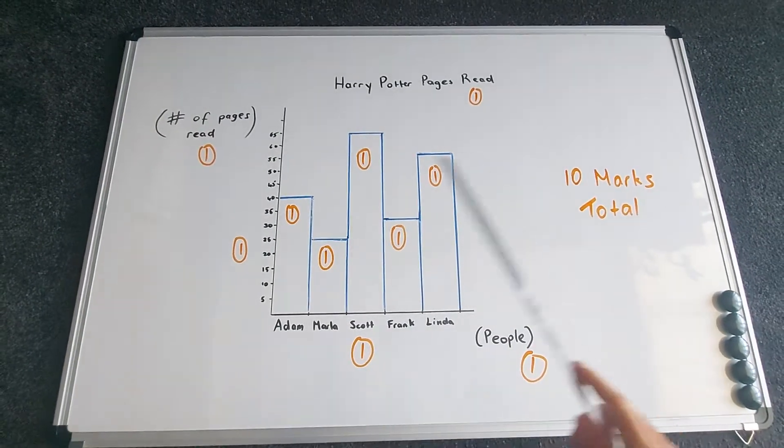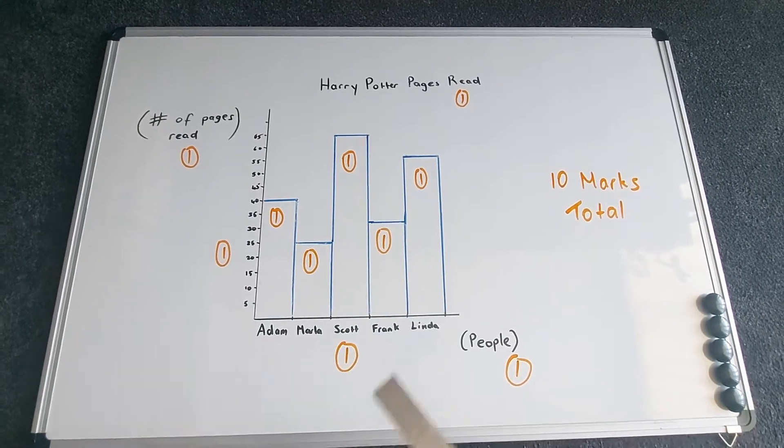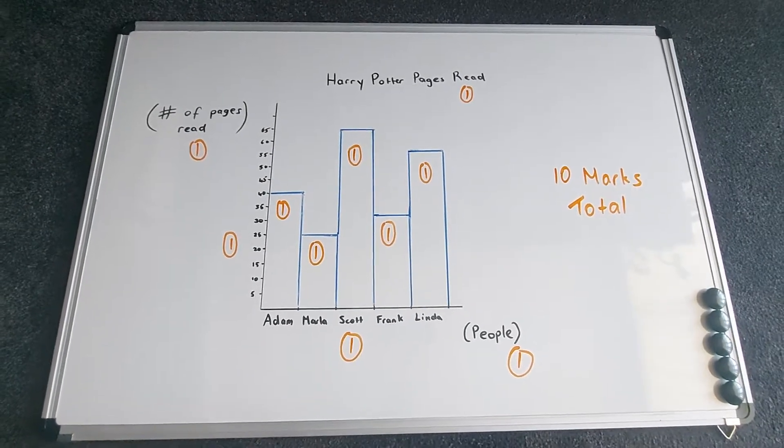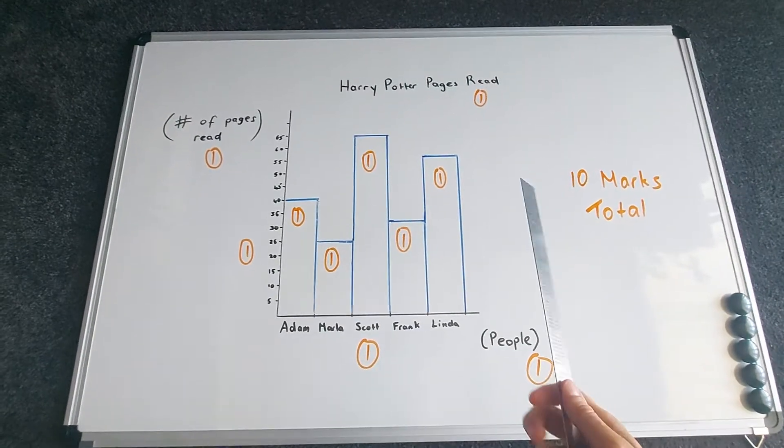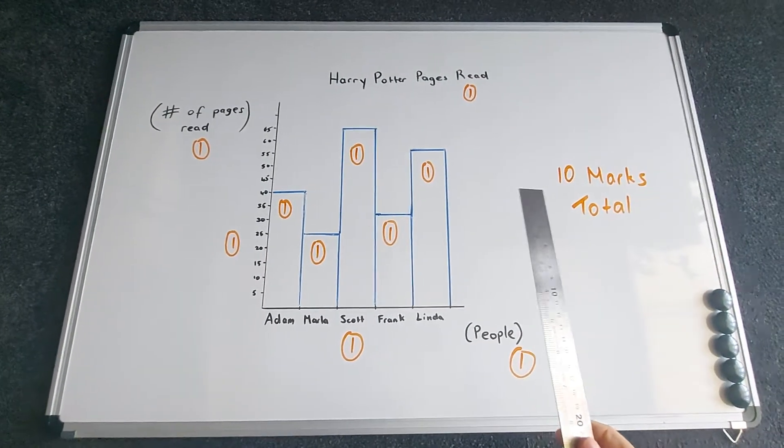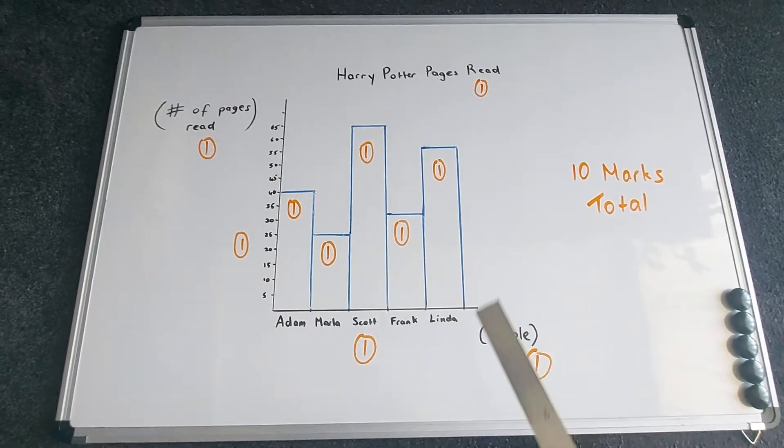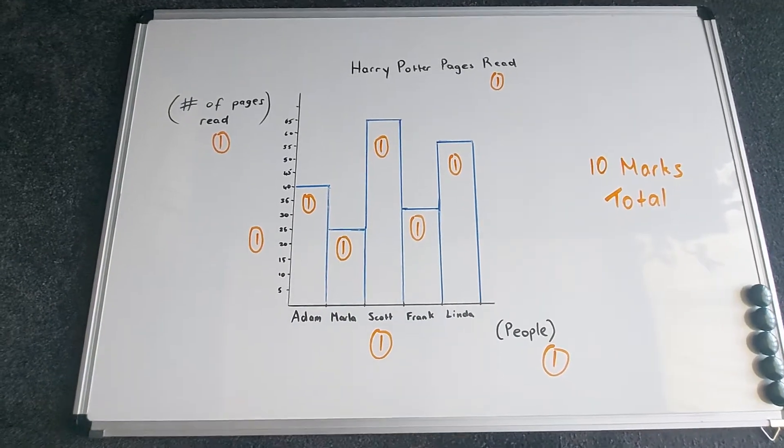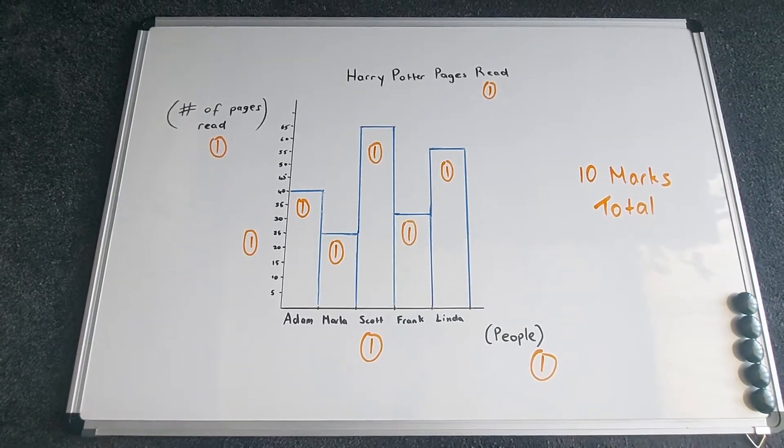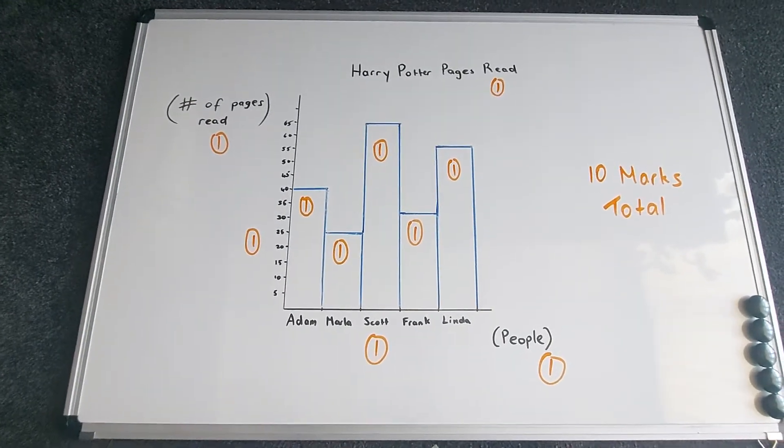So your graph should look something like this, but I'm going to go through in detail how to allocate the marks for yourself. The first couple things to check: did you use a ruler? If you didn't use a ruler, you have to take off at least one mark because you must use a ruler for all your graphs. And the second one is, did you create a bar graph? If not, you're going to have to take off at least one mark as well.